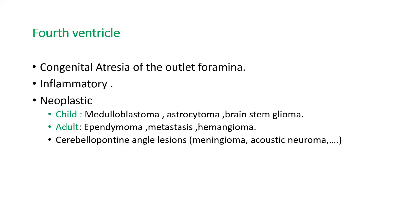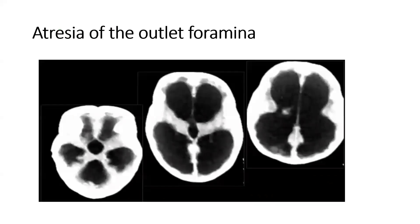Fourth ventricle obstruction causes include congenital atresia of the outlet foramina, inflammatory, or neoplastic. In children, the most common tumors are medulloblastoma, astrocytoma, and brainstem glioma. In adults, ependymoma, metastasis, and hemangioma, or cerebellopontine angle lesions such as meningioma or acoustic neuroma. In atresia of the outlet foramina, there is dilatation of the lateral, third, and also the fourth ventricle, which is ballooned because the obstruction is near to it.